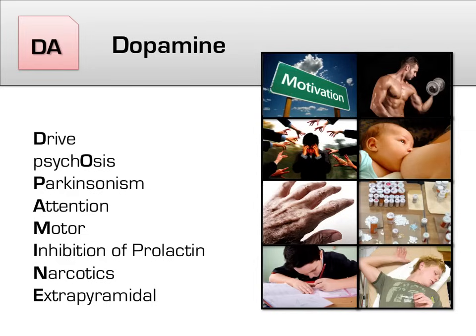I is for inhibition of prolactin. Dopamine was once known as prolactin-inhibiting factor, which explains its crucial importance in regulating prolactin release. Therefore, when dopamine is blocked, a side effect can be milk released from the breasts. N is for narcotics, showing that the release of dopamine plays a strong role in how addictive a substance is. Finally, E is for extrapyramidal, most often heard in the context of extrapyramidal side effects. This relates back to the fact that dopamine controls motor functions, so if you block that, you can get significant motor side effects. We'll go over the extrapyramidal side effects in more detail later.